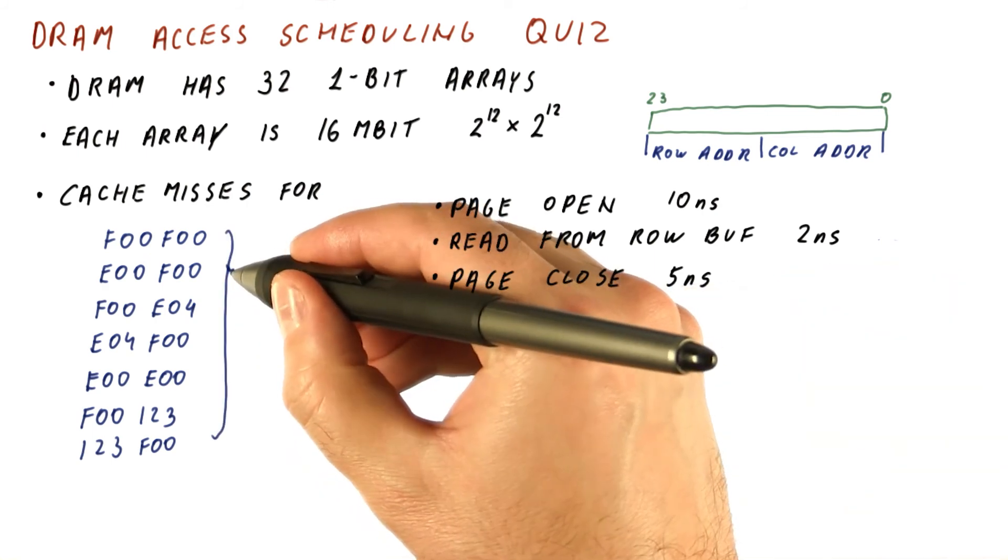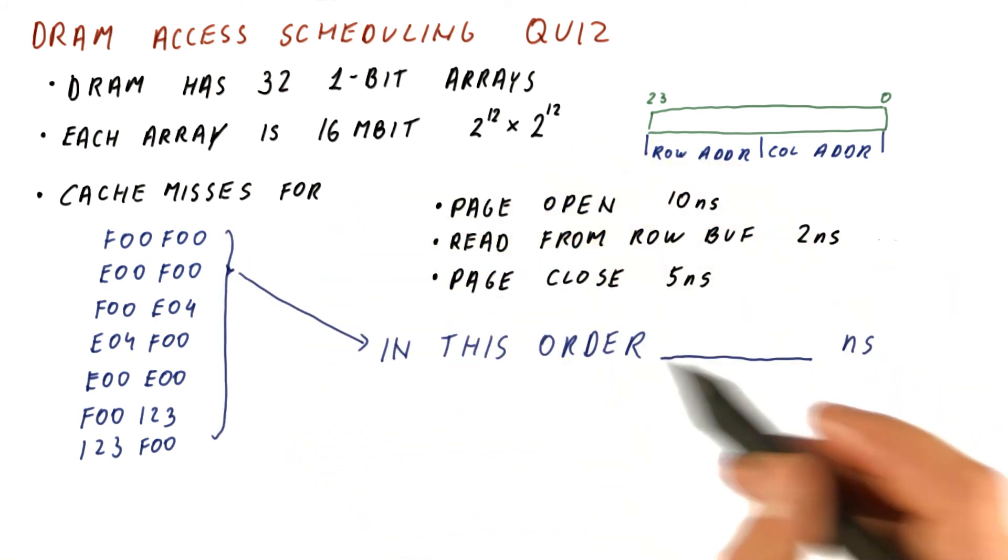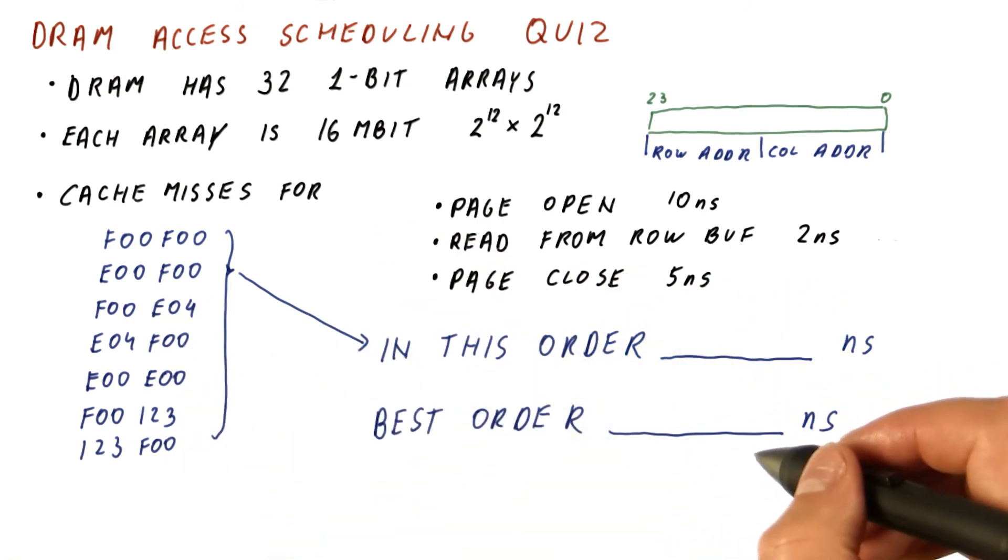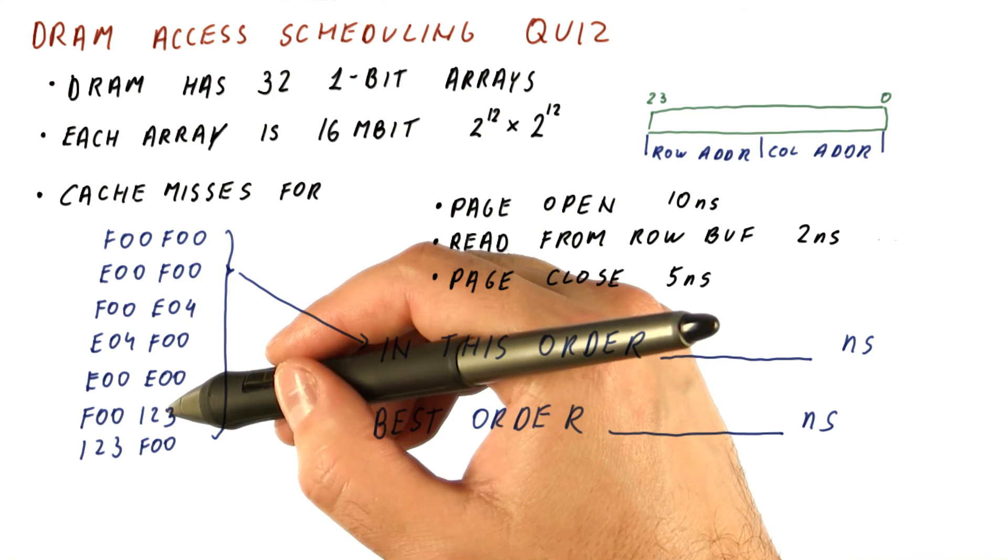These operations, how long do they take if we do them in this particular order? And how long do they take if we're allowed to reorder them, so that the time gets reduced?